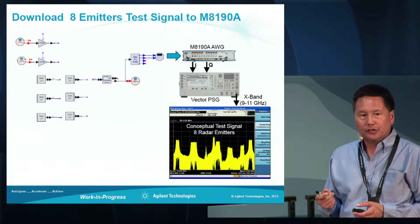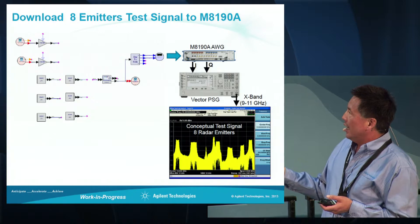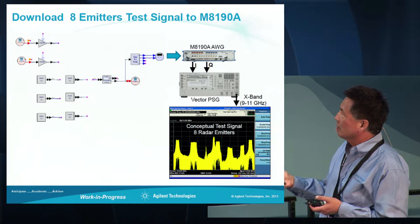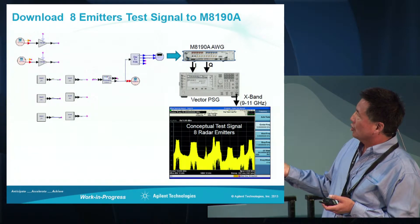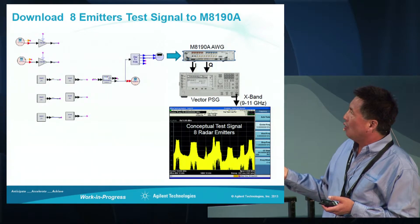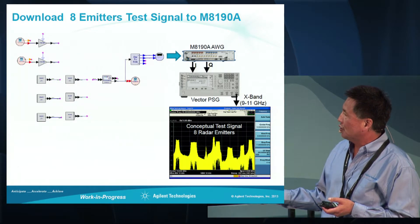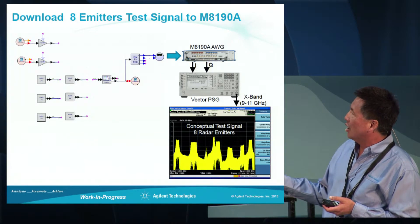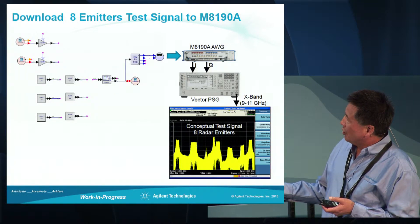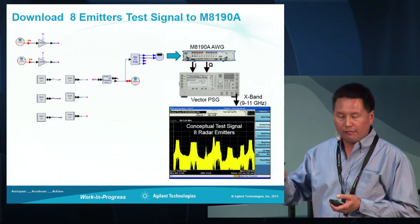Once we've downloaded the signal to the AWG, we're generating an X-band signal centered at 10 GHz, so we're generating I and Q waveforms out of the AWG. The I and Q are then being modulated onto a 10 GHz carrier using a vector PSG. This shows the resulting output signal of the PSG being measured on a PXA signal analyzer. You'll notice the different radar signals being shown with varying bandwidths and varying amplitudes.